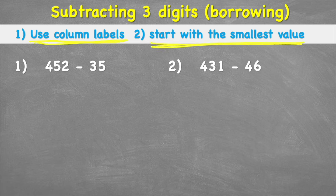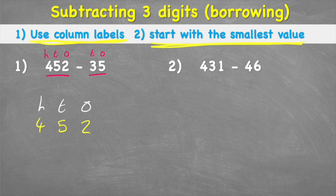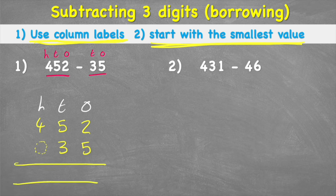Looking at 452, we have two in the ones, five in the tens, and four in the hundreds. In 35 we have five ones and three tens. Putting ones, tens, and hundreds labels, I place 452 and 35 into the correct columns. I add a placeholder zero under the hundreds next to the three — it doesn't change the value of 35 but will help with the subtraction.